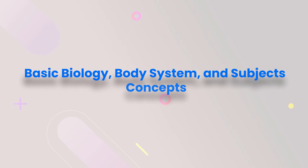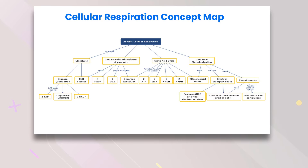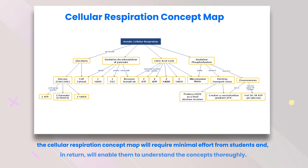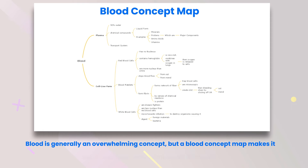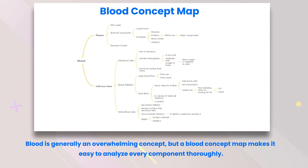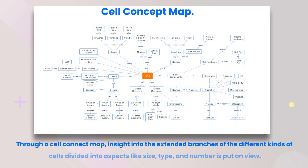Cellular respiration concept map: the cellular respiration concept map will require minimal effort from students and in return will enable them to understand the concepts thoroughly. Blood concept map: blood is generally an overwhelming concept, but a blood concept map makes it easy to analyze every component thoroughly.